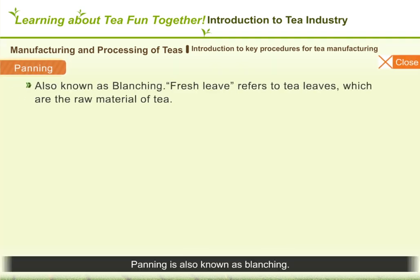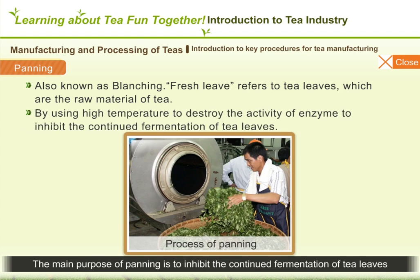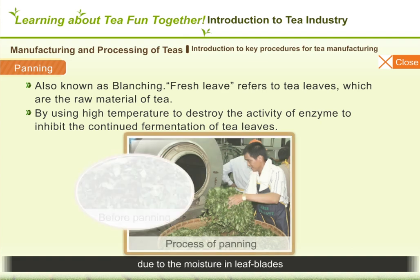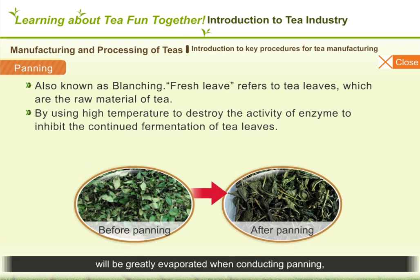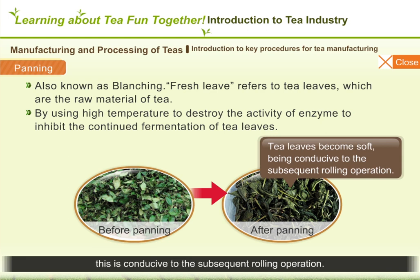Panning is also known as blanching. The term fresh leaves refers to tea leaves, which are the raw material of teas plucked from tea trees. The main purpose of panning is to inhibit the continued fermentation of tea leaves by using high temperature to destroy the activity of the enzyme. Moreover, the moisture in the leaf blades will be greatly evaporated during panning, making tea leaves become soft, which is conducive to the subsequent rolling operation.